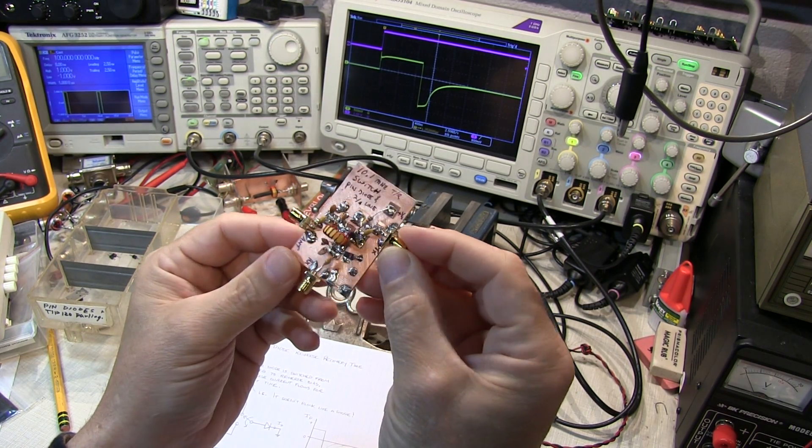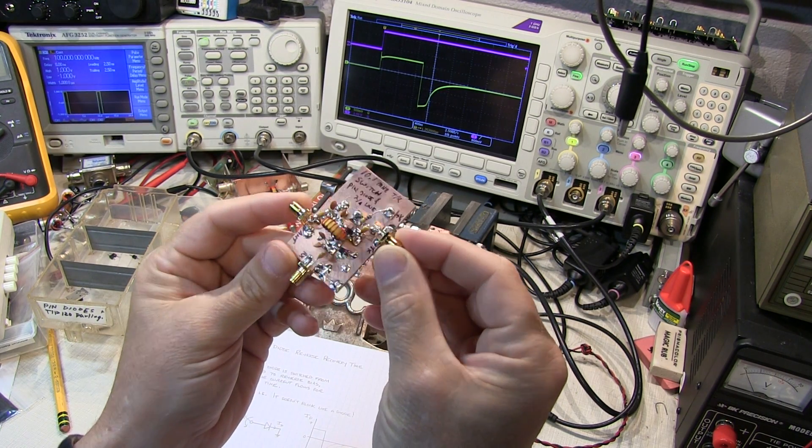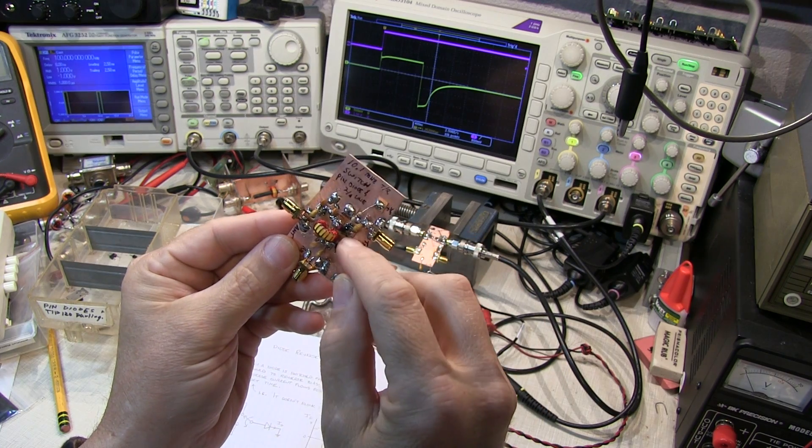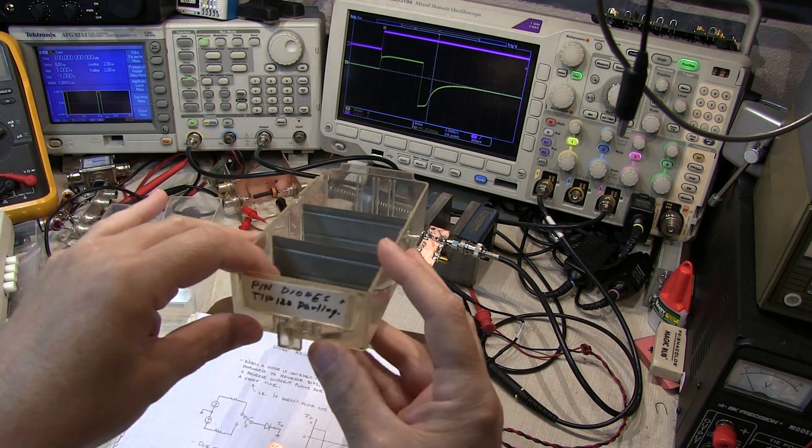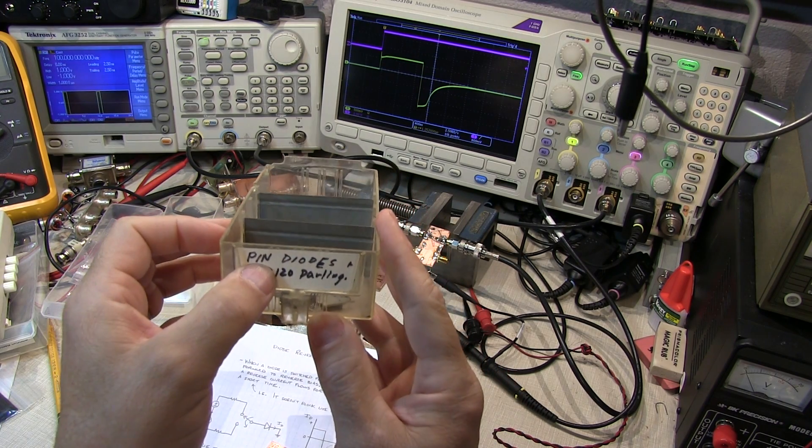Now in my previous video, I built this pin diode based transmit receive switch. I used some pin diodes that I picked up in a collection of parts at a ham fest and they were just unlabeled as pin diodes.